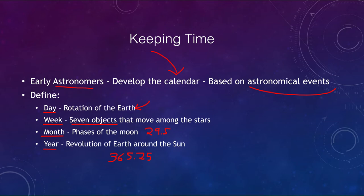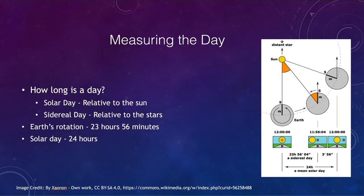Let's look at how we measure a day in a bit more detail. There are a couple of different measures. In everyday use we use the solar day, which is measured relative to the sun. Astronomers, on the other hand, use the sidereal day, which is relative to the stars. The earth takes 23 hours and 56 minutes to rotate, but our solar day is 24 hours.